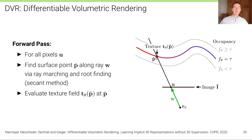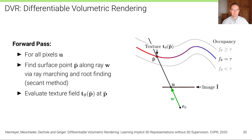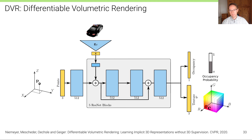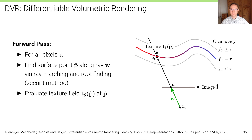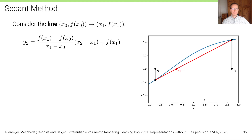Once we have found point P̂ — the intersection of the ray with the implicit surface — we evaluate the texture network T_θ at that estimated location, which gives us the color. We insert that color at the corresponding pixel location for which we defined the ray, and do this for all pixels to get the predicted image.